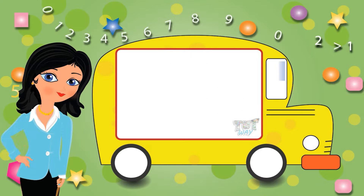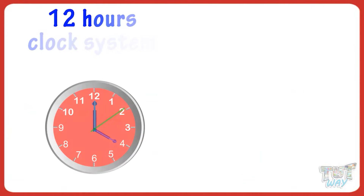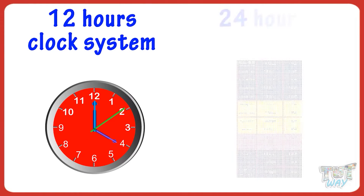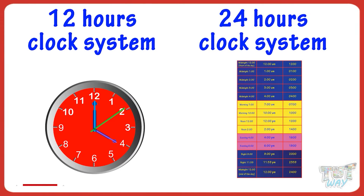Hi kids! Today we will learn about two types of clock systems: 12-hour clock system and 24-hour clock system.